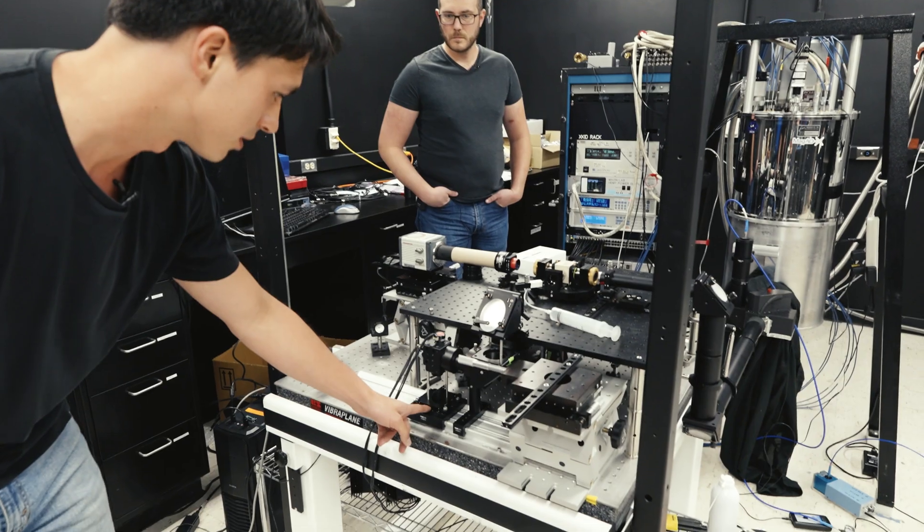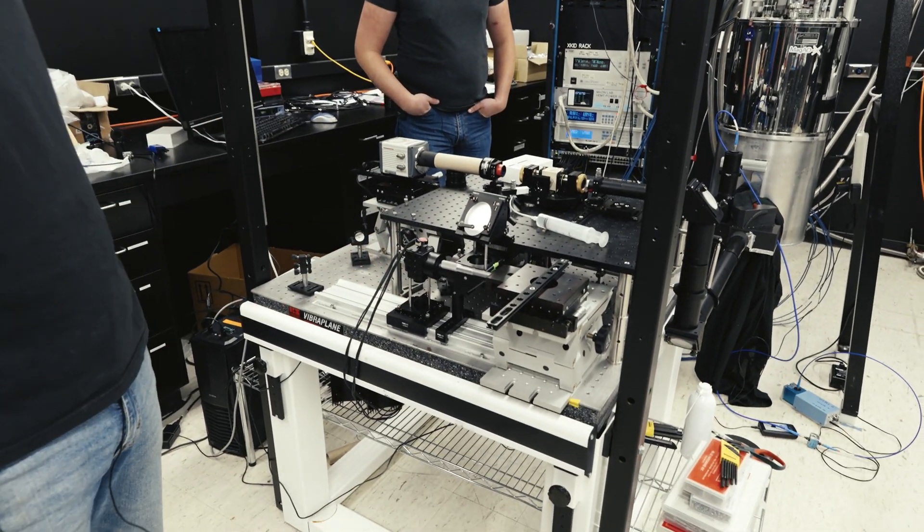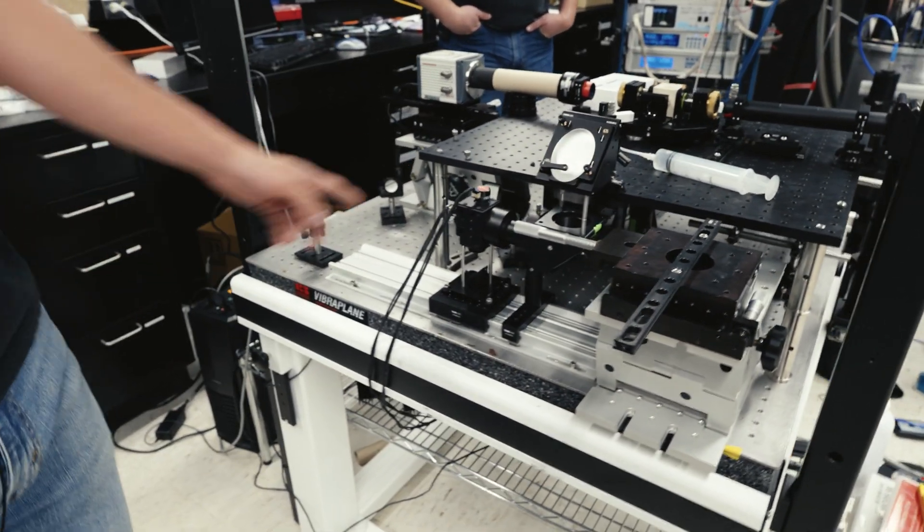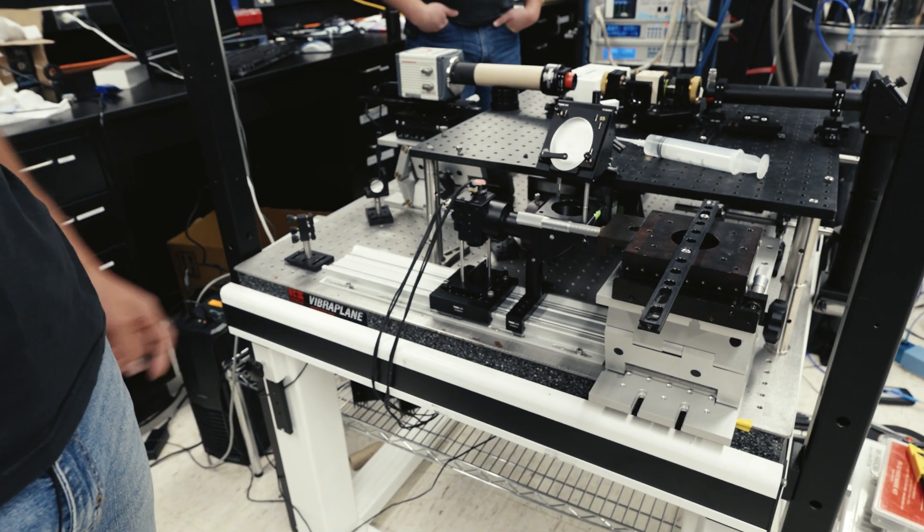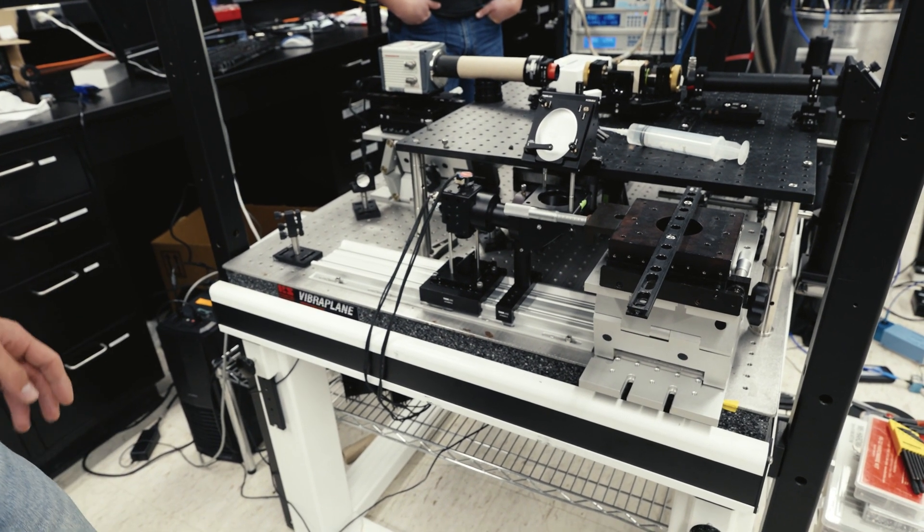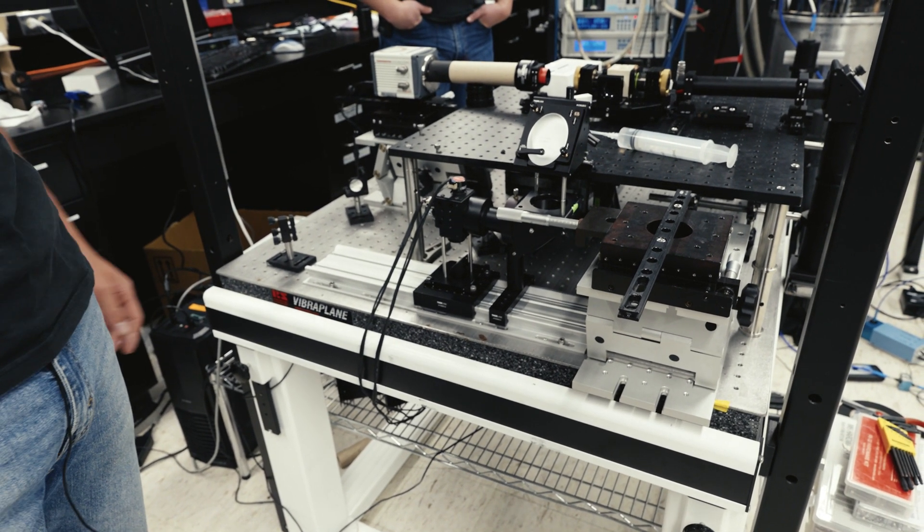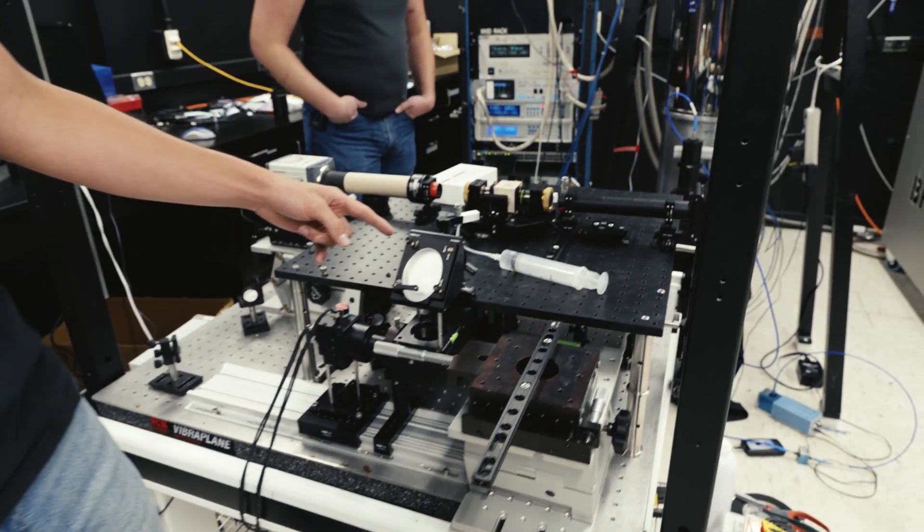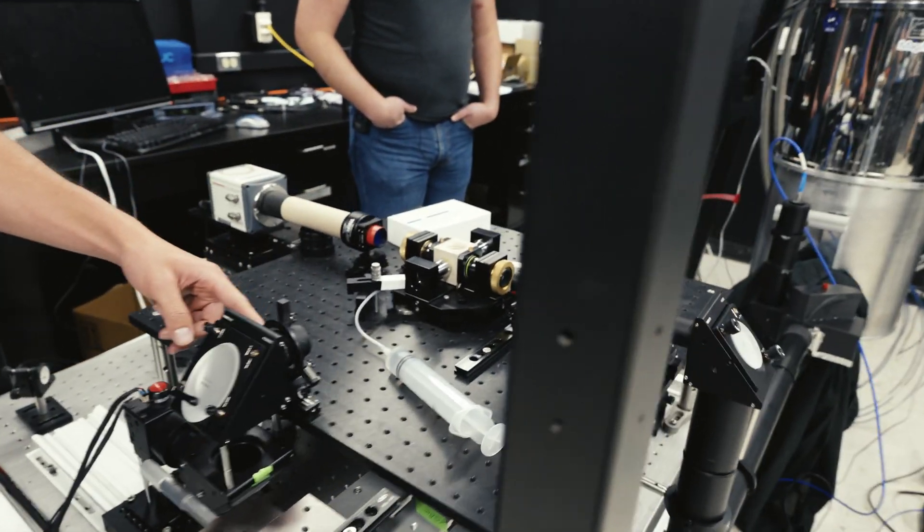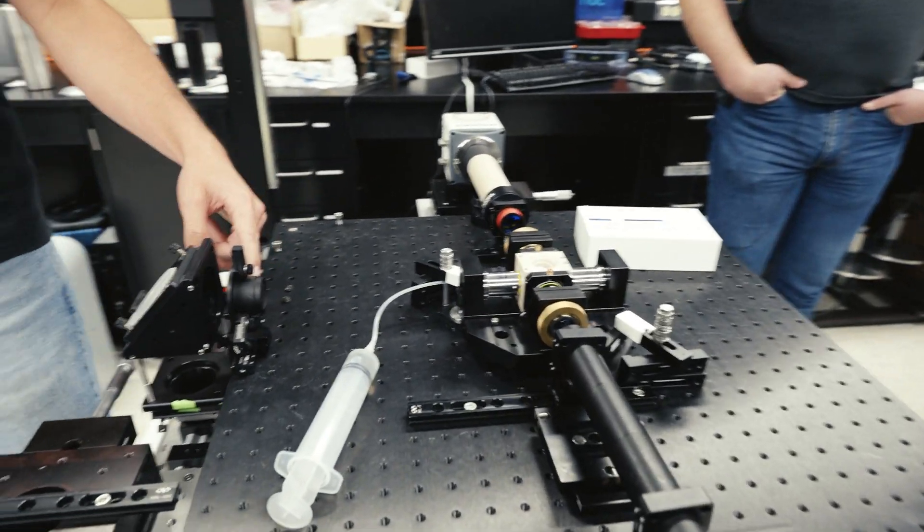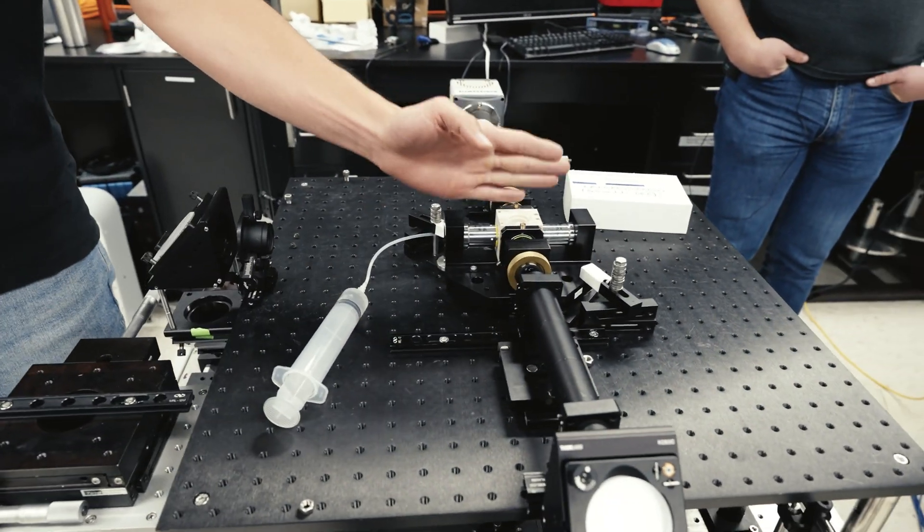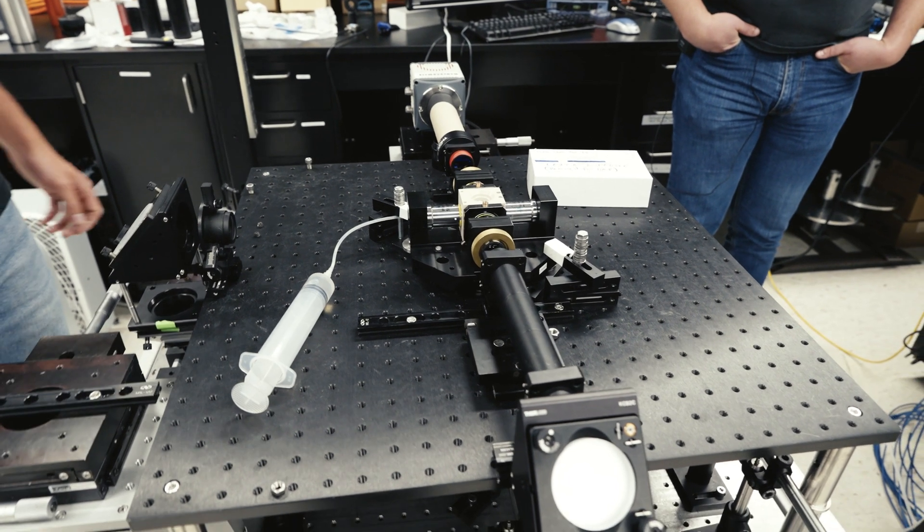Next it comes into this two-axis galvo here. What this galvo allows us to do is take the beam and actually scan it up and down, and this creates what we actually call the light sheet. Then we periscope this beam up into the microscope so we have our two lenses here for focusing the beam and then our objective which actually focuses it into the microscope.